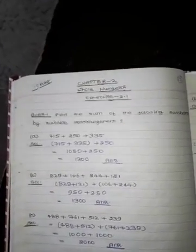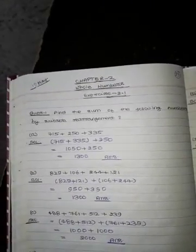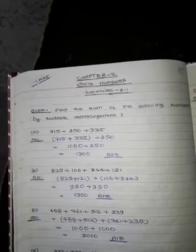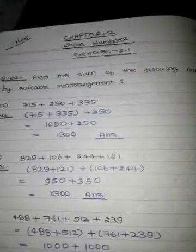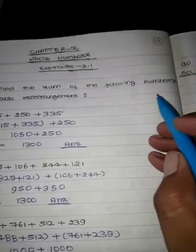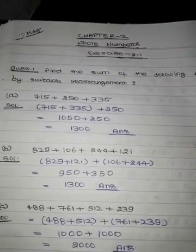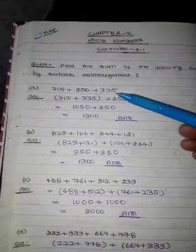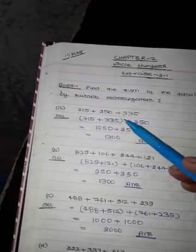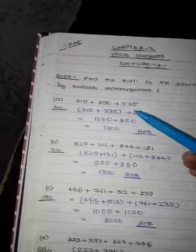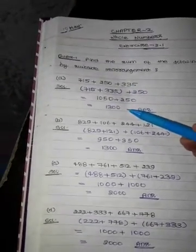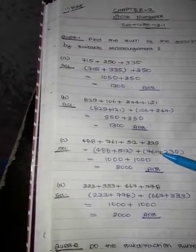Good morning students, welcome to Victorious International School YouTube classes. Exercise 2.1, question number one: find the sum of the following numbers with suitable rearrangement. We have to do the sum, we have to do the suitable arrangement, we have to do the addition.